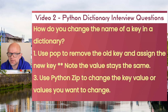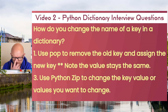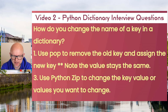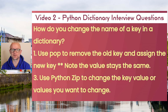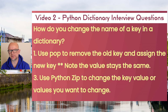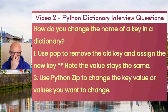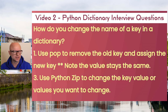You may be asked how to change the name of a key in a dictionary. You can use pop() to remove the old key and assign the new key name. Note that the values stay the same — essentially pop drops the old key name but the value associated with it is retained under the new key name. You can also use Python's zip() to change key names. Let's look at the code to crystallize this.